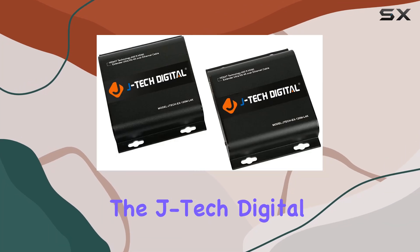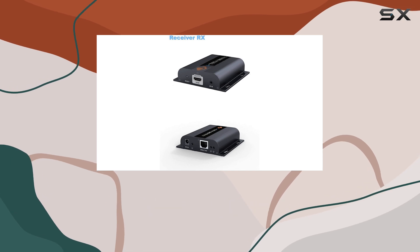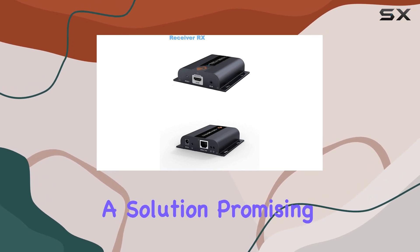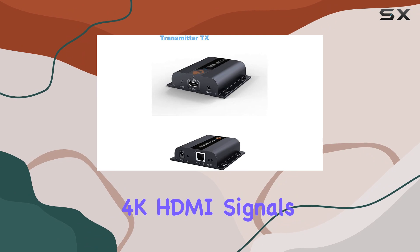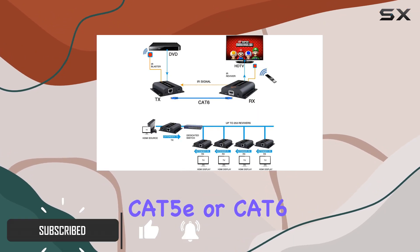Today, we're diving into the JTEC Digital HBIT-T Series Ultra HD 4K HDMI Extender, a solution promising to extend your 4K HDMI signals up to 400 feet over a single Cat5E or Cat6 cable.